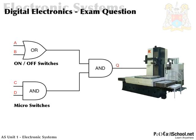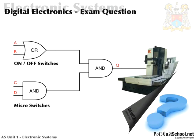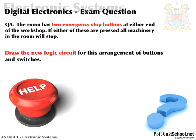Now following on from that, it says the room has two emergency stop buttons at either end of the workshop. So these are additional safety devices. If either of these are pressed, all machinery in the room will stop. Draw the new logic circuit for the arrangement of the buttons and switches. Obviously this answer is going to incorporate the first answer plus a little bit extra.